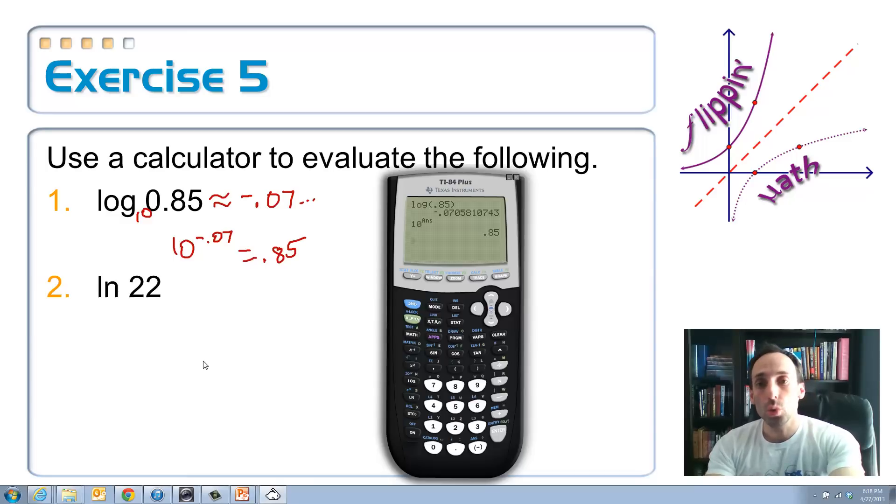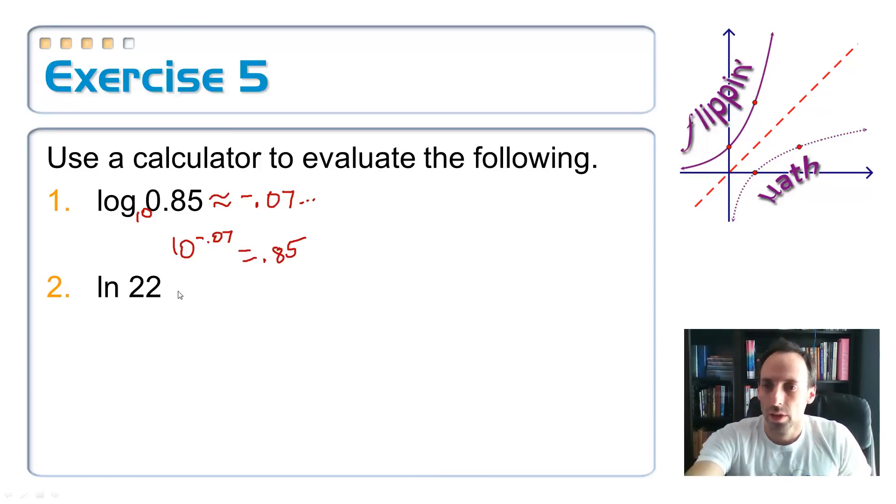So let's look at number two, the natural log of 22. So that's right underneath the log key, natural log. Inside the parentheses, 22. Close those parentheses, enter 3.09. So this is approximately equal to 3.09. What does that mean? It means e to the 3.09 power, with all the decimals and stuff, is equal to 22.